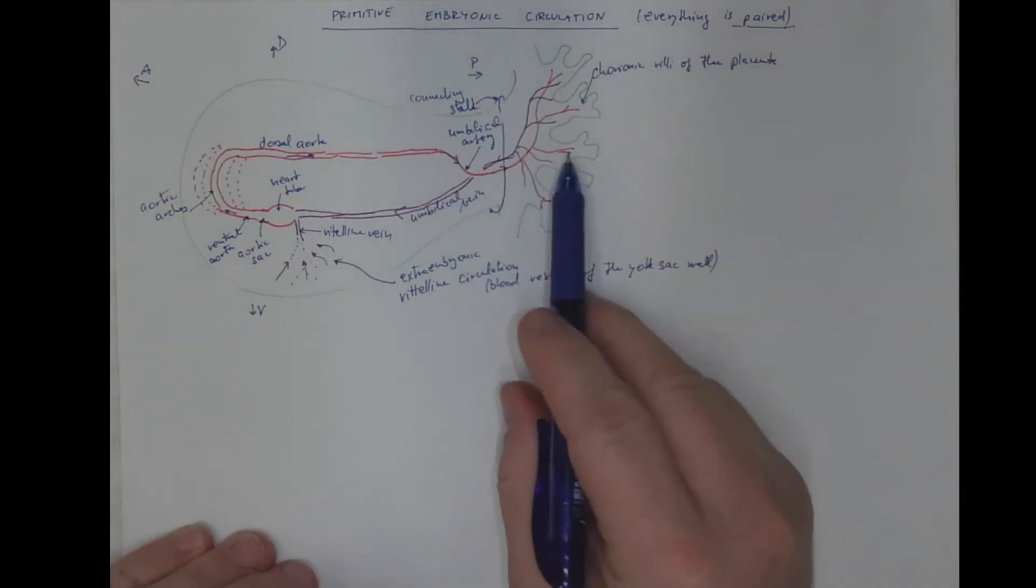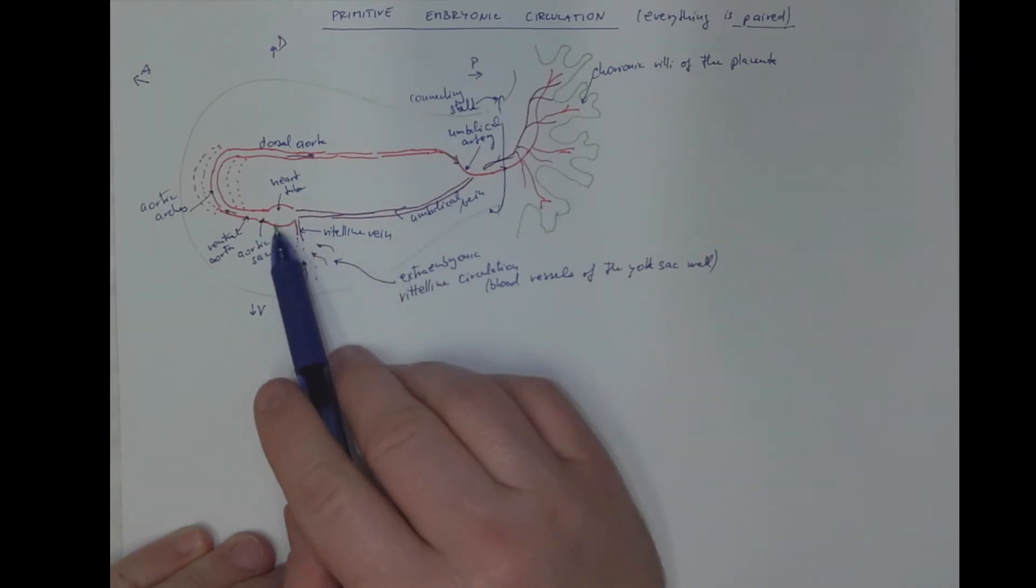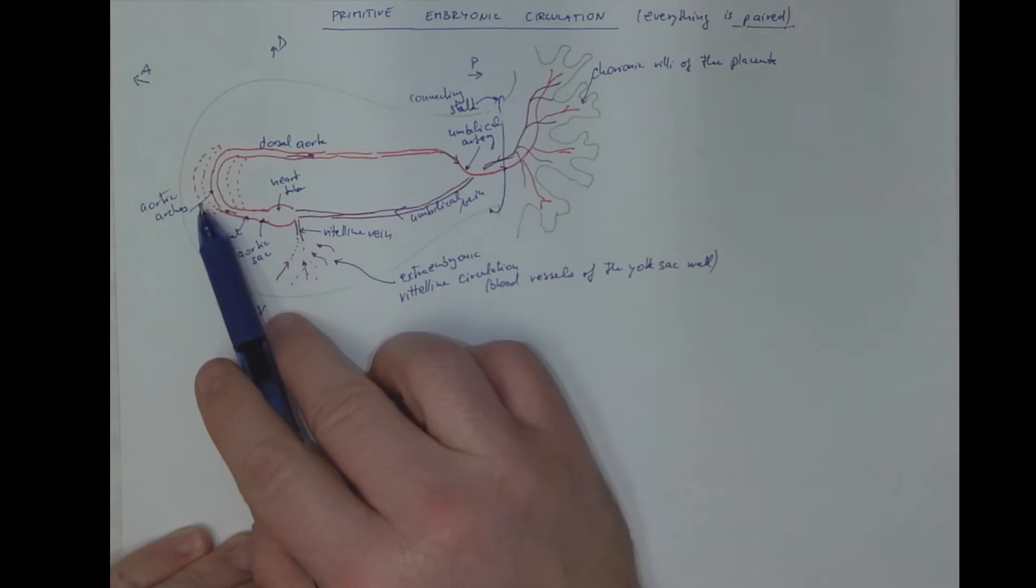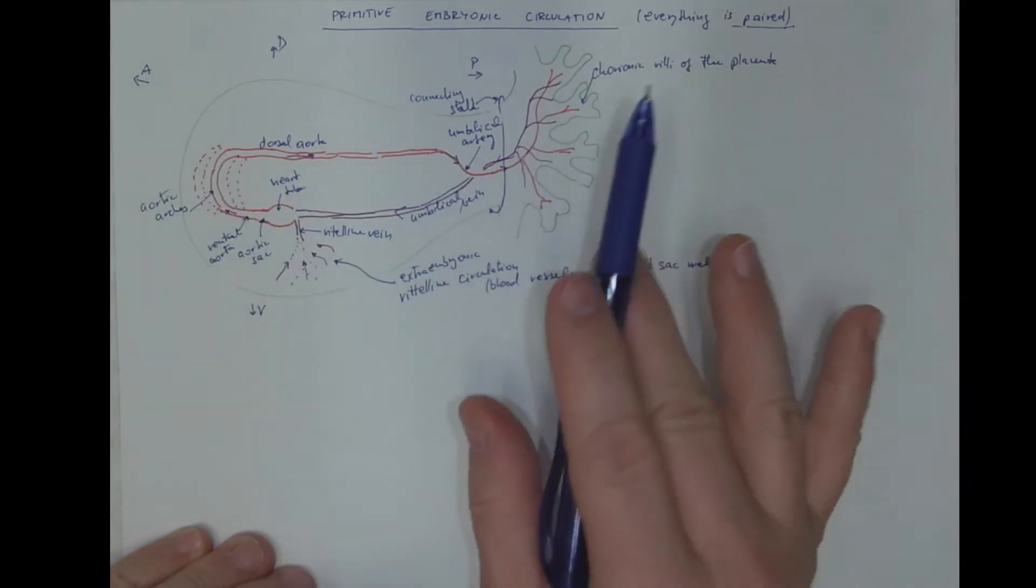Again, everything is paired. So we got right and left heart tube, right and left aortic arches, right and left dorsal aorta, right and left everything.